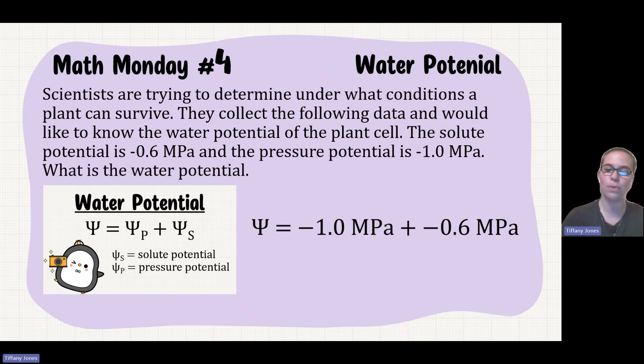So if we sub it into our equation, we know that our pressure potential is negative 1.0 megapascals and we know that our solute potential is negative 0.6 megapascals. We sub that in and we're going to get negative 1.6 megapascals, which is our water potential.